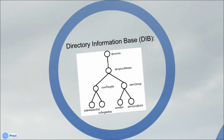The directory information base is the actual hierarchical database that contains all the information in the directory. X.500 uses a distributed directory hierarchy in which different subsets of the DIB are found on different servers at different locations. From the user's point of view, however, the entire global X.500 directory appears to be accessible from the local directory server that the directory user agent connects to. A schema is used to define the various classes of objects and their attributes which can be stored in a directory.